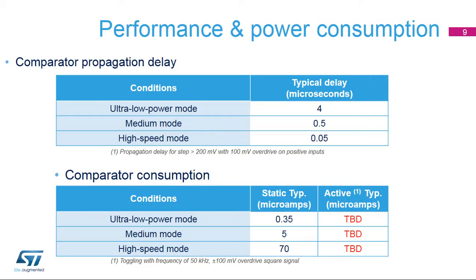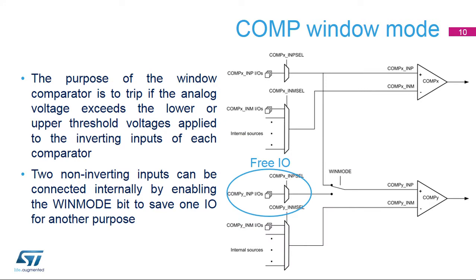The on-chip comparator configuration capability allows the user to select the best performance point for the targeted application. It replaces the external stand-alone comparator, thereby reducing the bill of materials. The purpose of the window comparator is to trigger an interrupt if the analog voltage goes beyond the defined lower and upper voltage thresholds applied to the inverting inputs of each comparator. This event can generate an interrupt through the EXTI line. Two non-inverting inputs can be connected internally by enabling the win-mode bit, and therefore save one I/O for another purpose.